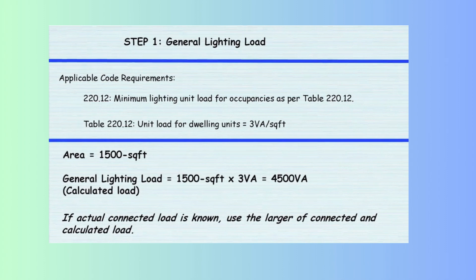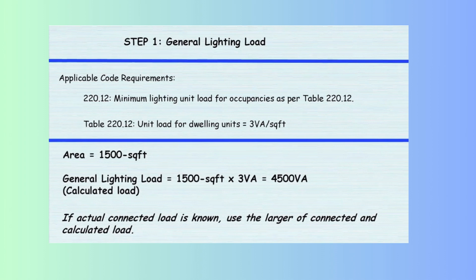Key considerations: Inclusion of garage area — the 2023 NEC introduces a significant change. The floor area of garages must now be included when calculating the minimum lighting load for dwelling units. If the dwelling includes a garage, its square footage should be added to the habitable area before applying the unit load factor. Continuous load multiplier: the unit load factor of 3 VA per square foot already accounts for the 125% multiplier for continuous loads, as specified in NEC 210.20A, so no additional adjustment is necessary.